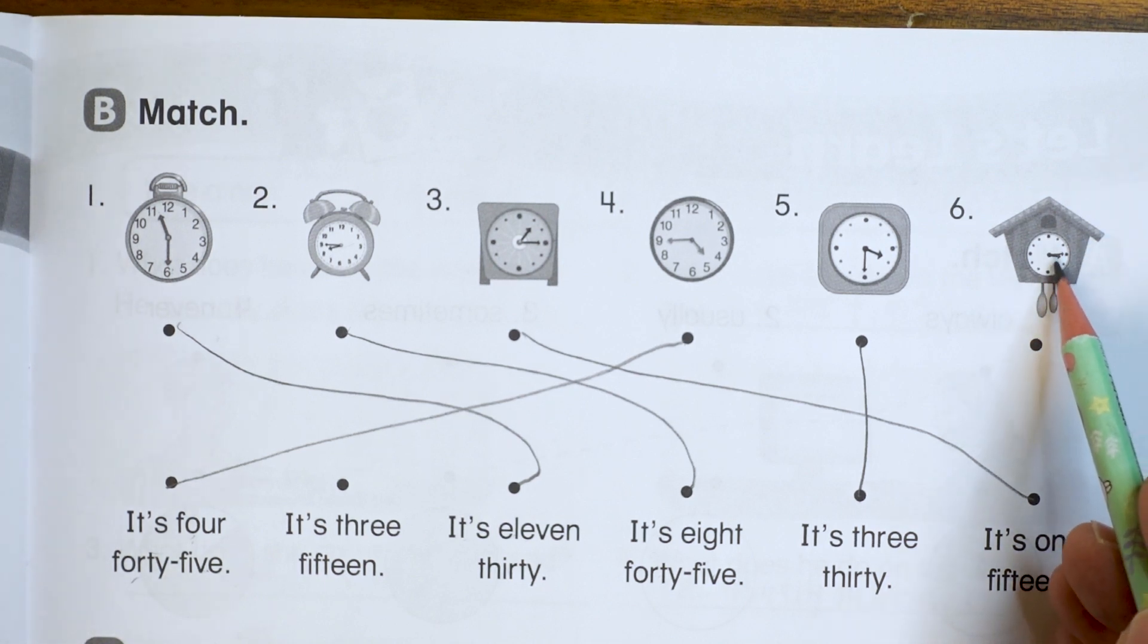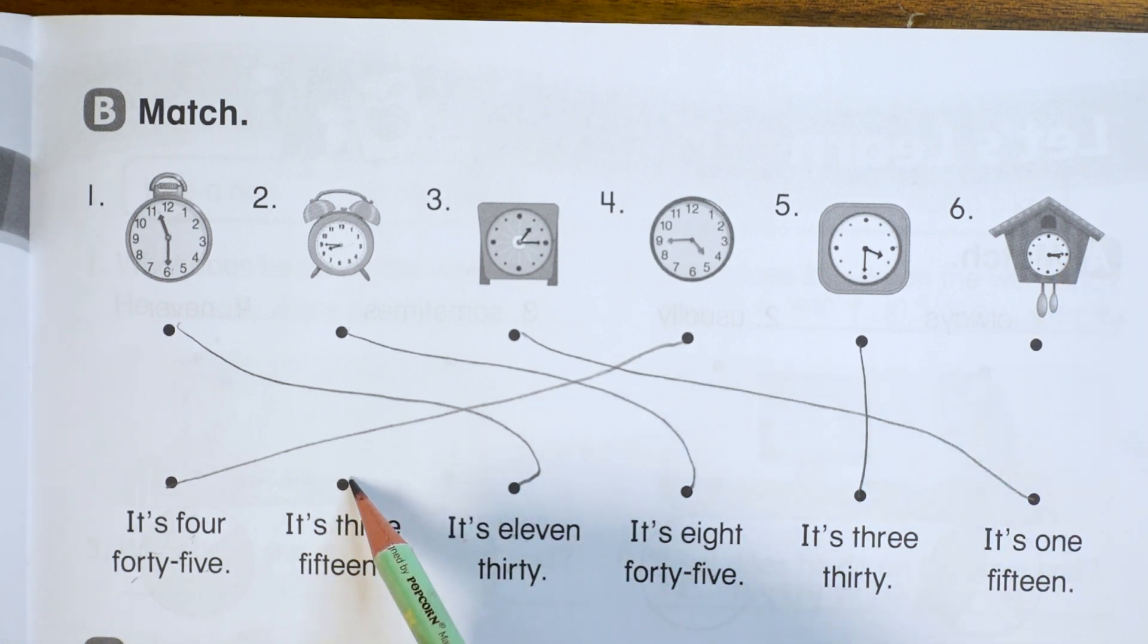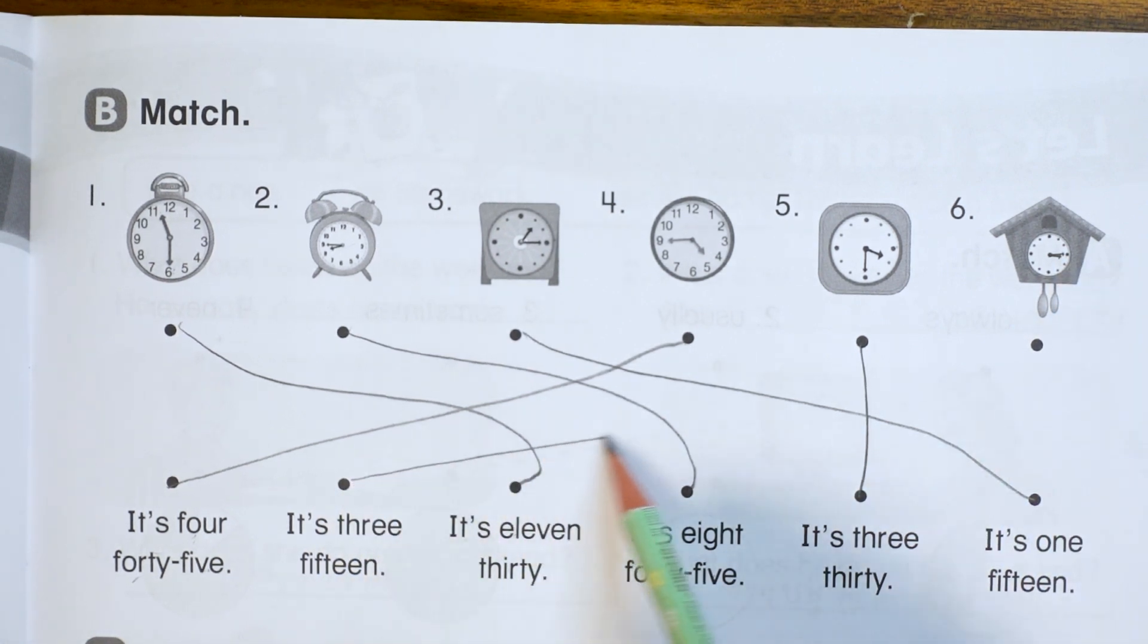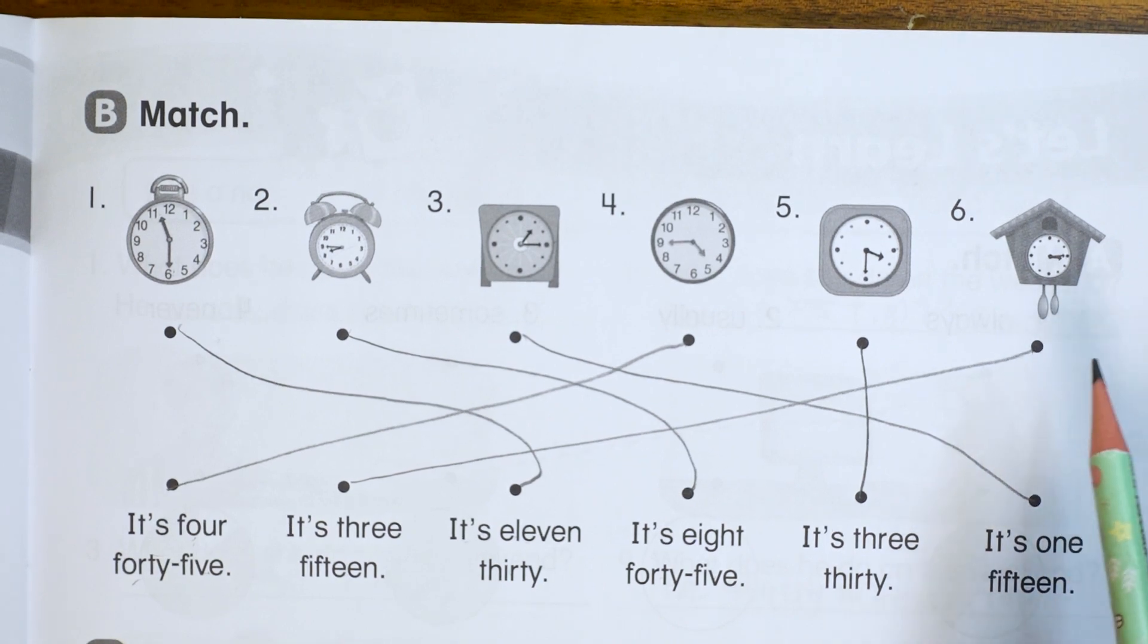And the last one, the hour hand is pointing again, same place in between three and the four, but the minute hand is pointing at 15. So that means it's 3:15. And just like that part B is done.